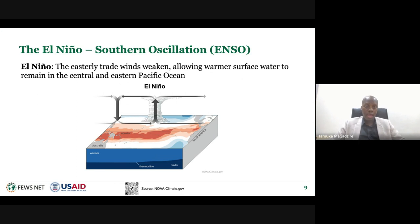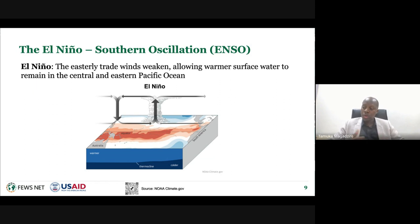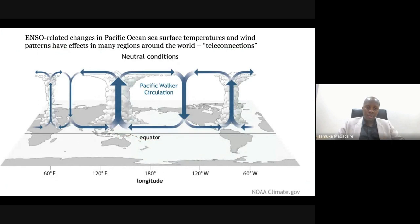With El Niño, what we'll be focusing on today, there is almost a reversal of some of the typical circulation patterns. The trade winds are now blowing westwards, which causes changes in where we have typical convection and also changes in sea surface temperatures. Because of these changes in sea surface temperatures, we can use this as an indicator to monitor El Niño. Although these changes are happening primarily in the Pacific Ocean, they have implications around the globe.